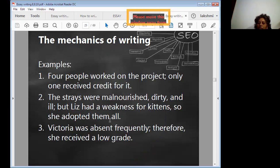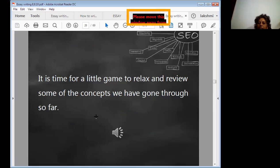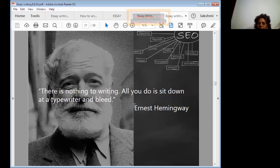'The streets were malnourished, dirty, and ill, but Liz had a weakness for kittens, so she adopted them all.' 'Victoria was absent frequently; therefore, she received a low grade.' It is time for a little game to relax and review some of the concepts we have gone through so far.